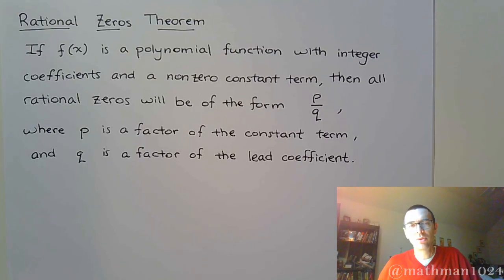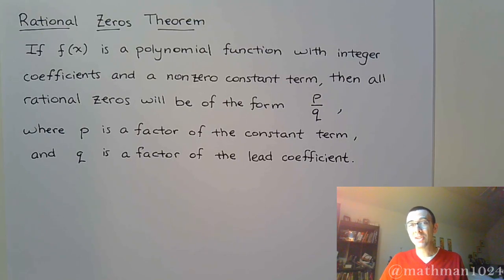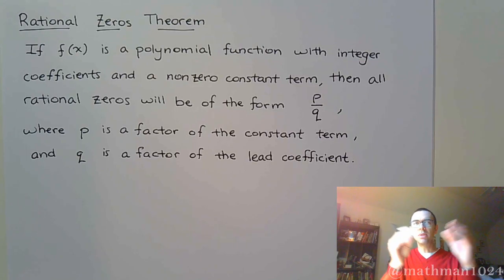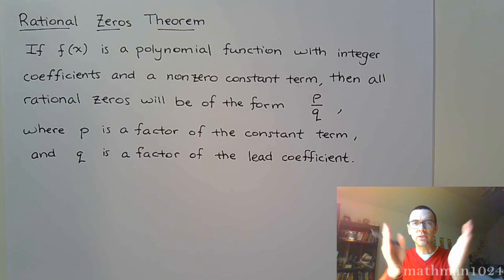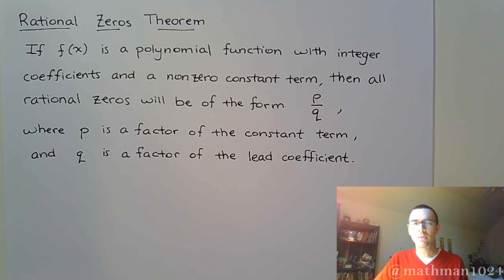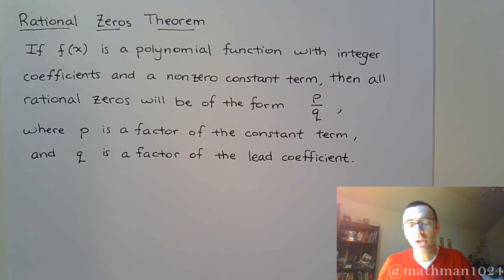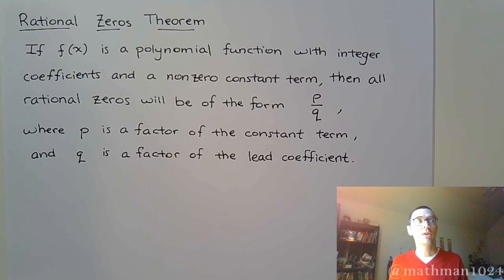In this video we want to talk about the rational zeros theorem. We've been spending quite a bit of time trying to find zeros of polynomial functions. In past examples I would give you a polynomial function and tell you what some factors are or what a zero would be, and then you could use that information to whittle this big long polynomial down to something more manageable — in particular, something quadratic, degree two. But sometimes I don't give you any clues, and this is where the rational zeros theorem comes into play. What it does is tell us something about zeros that are rational, meaning they can be written as a fraction.